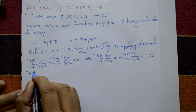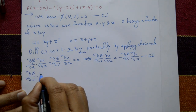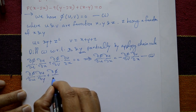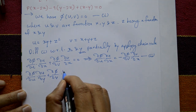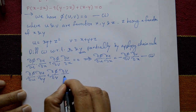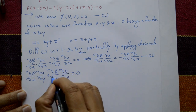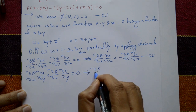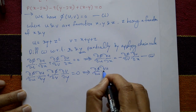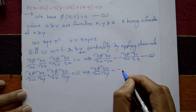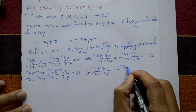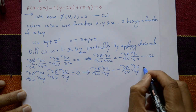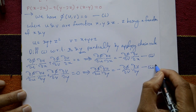Differentiating with respect to y: ∂φ/∂u · ∂u/∂y + ∂φ/∂v · ∂v/∂y = 0. Rearranging: ∂φ/∂u · ∂u/∂y = −∂φ/∂v · ∂v/∂y. This is equation number three.